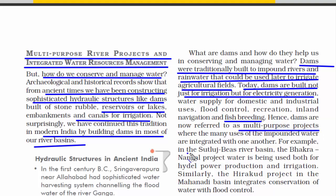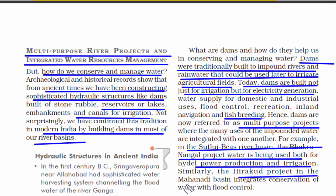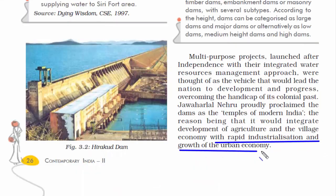Some examples: the Sutlej-Beas River Basin has the Bhakra Nangal Dam, used for hydroelectric power production as well as irrigation. The Hirakud Dam on the Mahanadi Basin in Odisha is used for water conservation and flood control. To boost a country's economy, rapid industrialization and urban growth require heavy machinery and facilities like shopping malls, railways, and metro — all consuming large amounts of electricity, for which we need dams. So again, you understand the cycle.